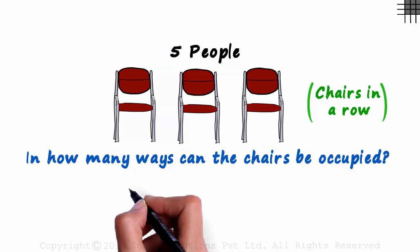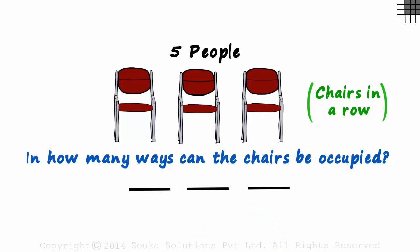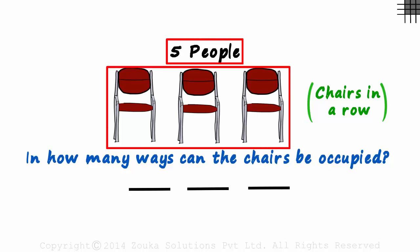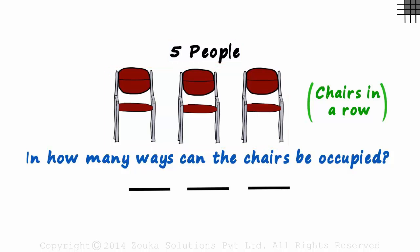So assume that these three chairs are like three slots. In how many ways can we fill the first slot? Understand the question well. If we have five people and all three chairs are empty, in how many ways can the first chair be occupied? It's logic. Any one of the five people can be seated on this chair. It's obvious. The chair can be occupied in five ways.